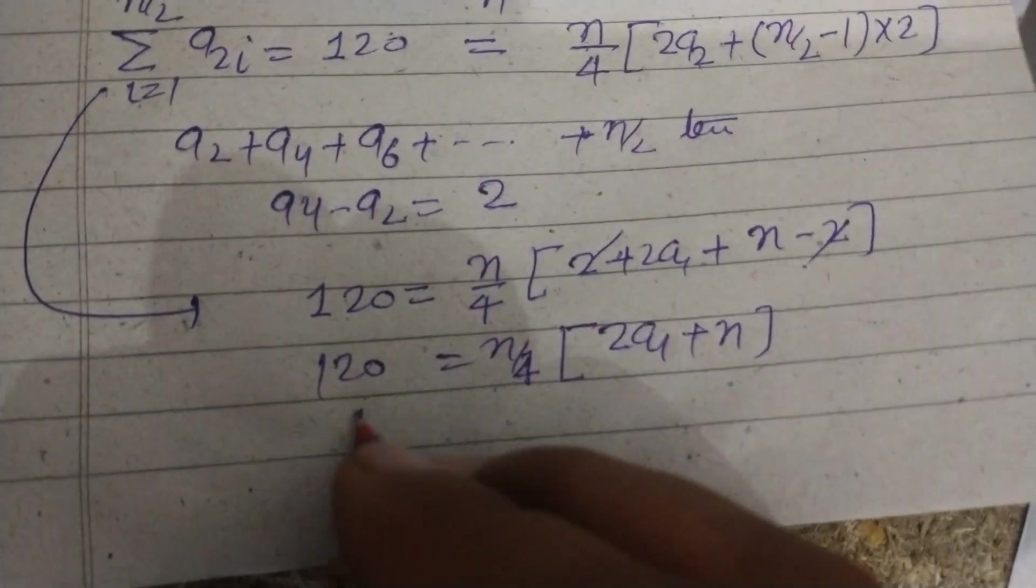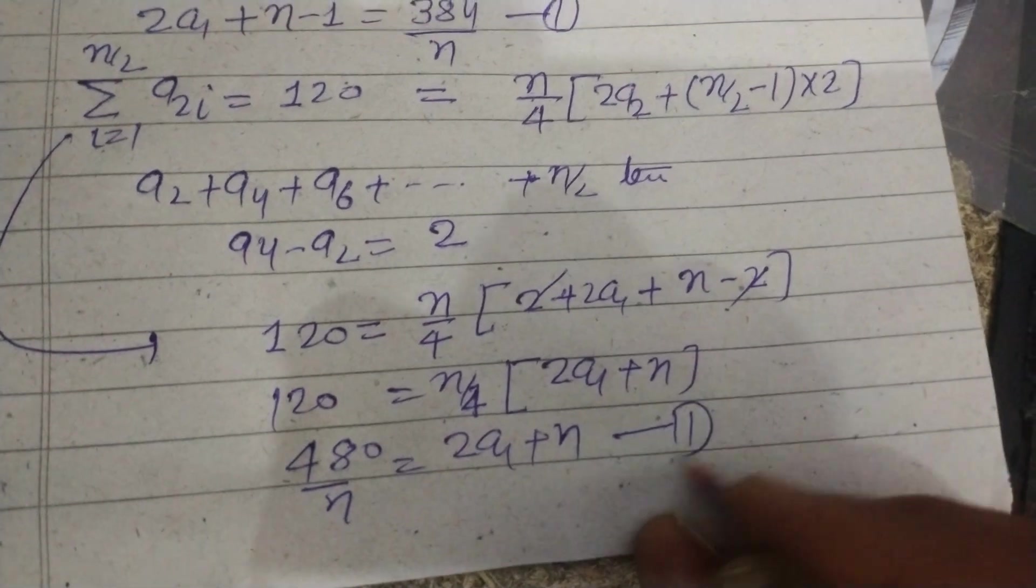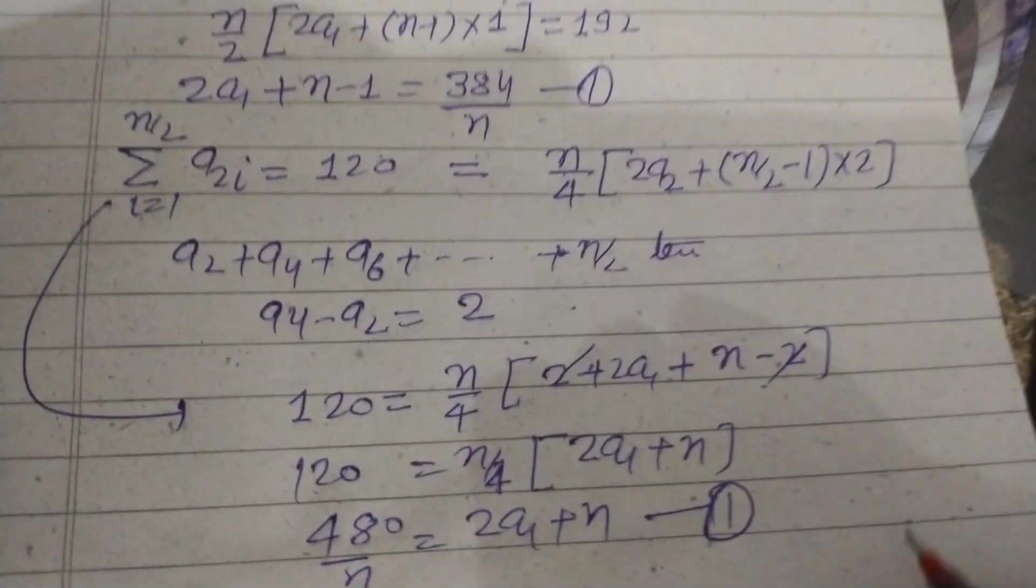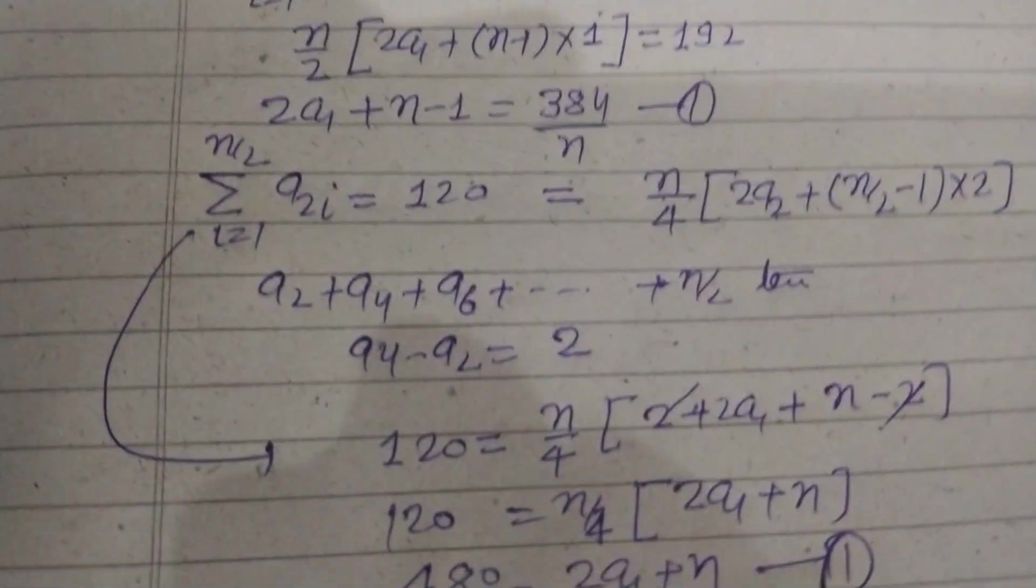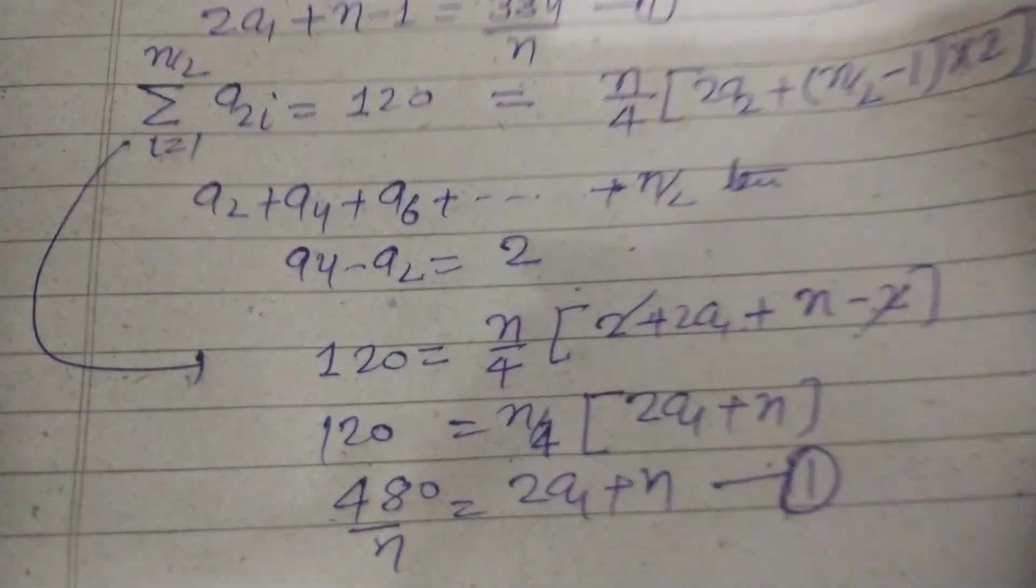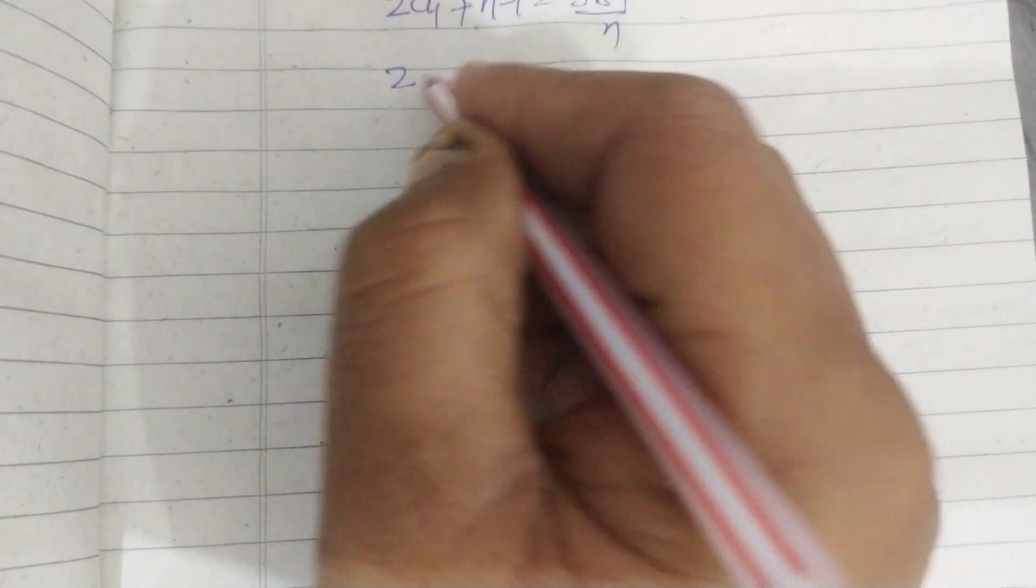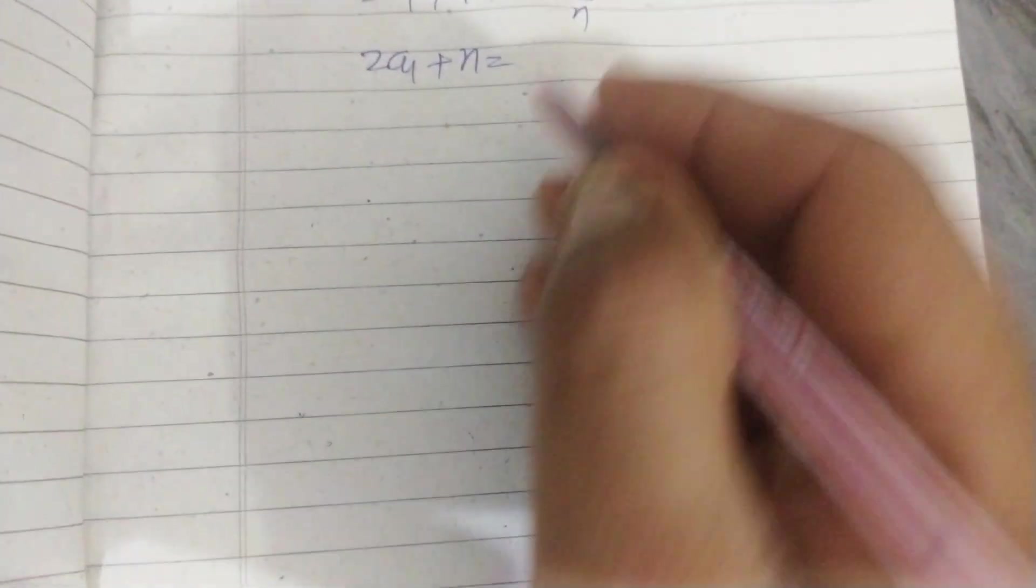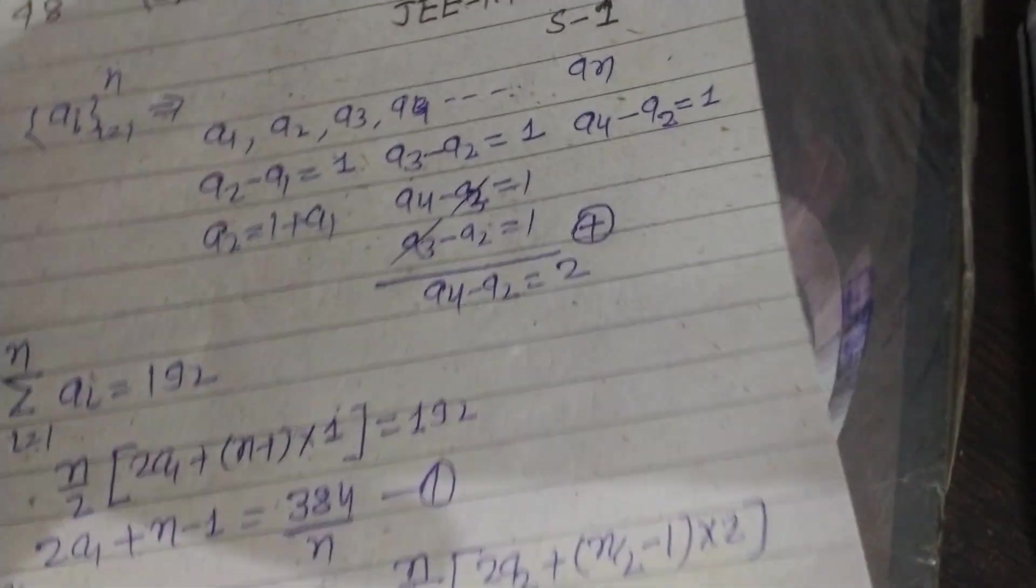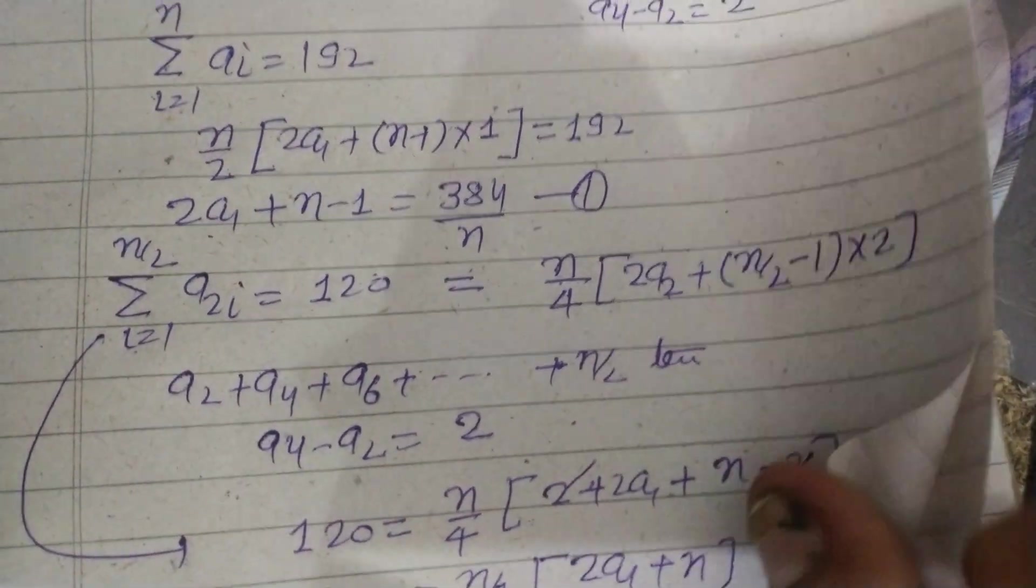This is 120. When we multiply, this is 480 by n equals 2a1 plus n, and this is our second equation. Now we solve these two equations. We have 2a1 plus n minus 1 equals 384 upon n, and 2a1 plus n equals 480 upon n.